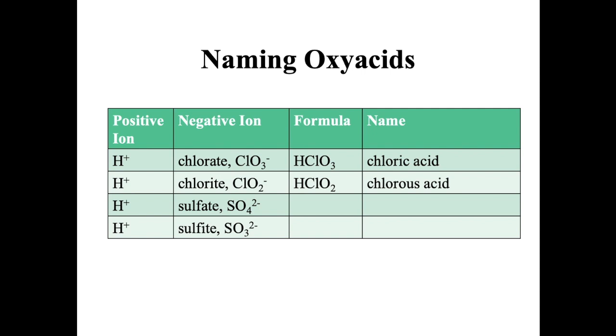All right, let's see how you did. So hydrogen combines with sulfate in a two-to-one ratio, which would become sulfuric acid. Hydrogen will combine with sulfite, also in a two-to-one ratio, and this becomes sulfurous acid.